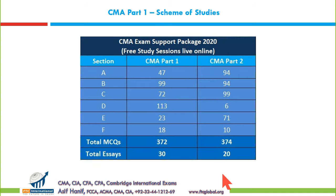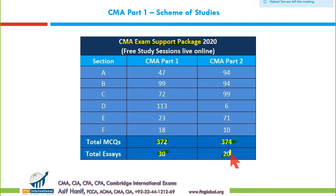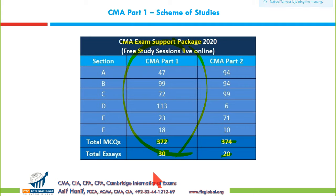The plan is two lectures per day, focusing on the CMA exam support package. This assumes most of you have already read from some institute or prepared independently. The package contains about 372 MCQs for CMA Part 1, 374 for Part 2, plus 30 essay types for Part 1 and 20 for Part 2. Theory will not be discussed in detail — focus will be on doing questions.